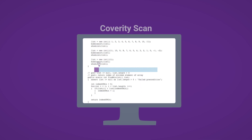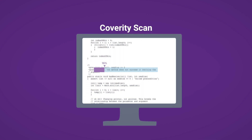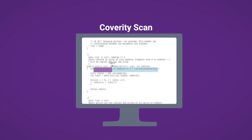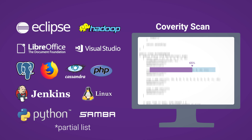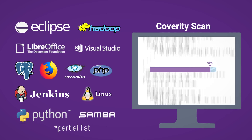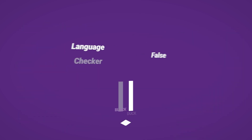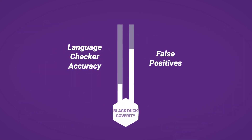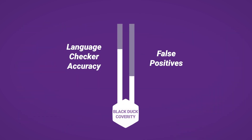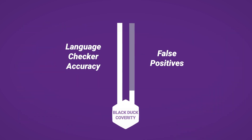We've scanned trillions of lines of customer code and thousands of open-source projects with Coverity Scan, and we use all that data to continuously optimize our language checkers for accuracy and minimize false positives.